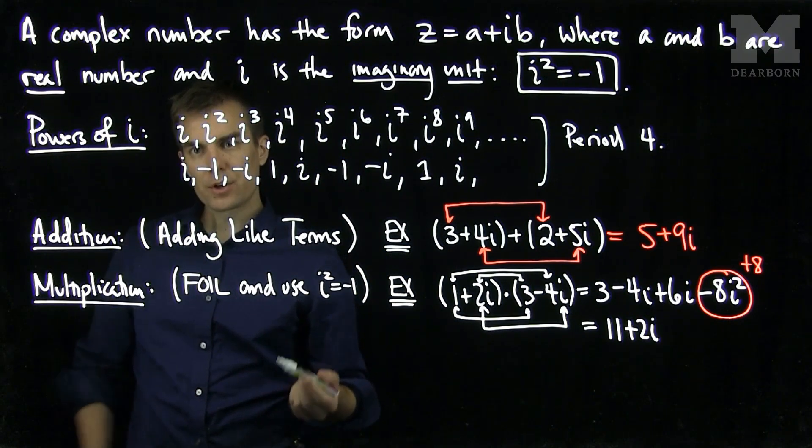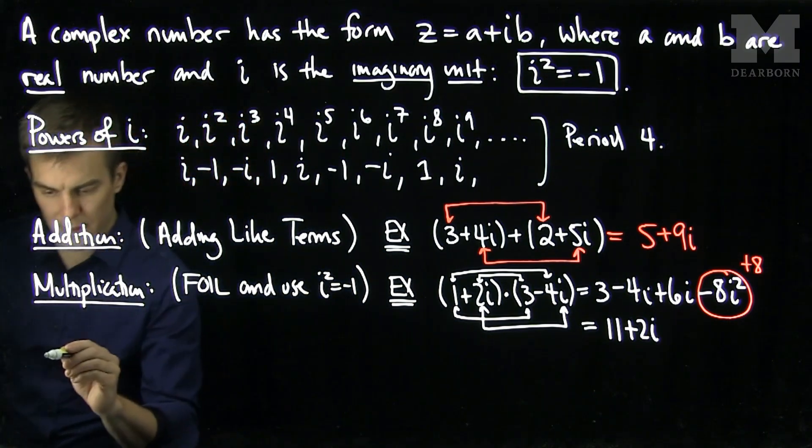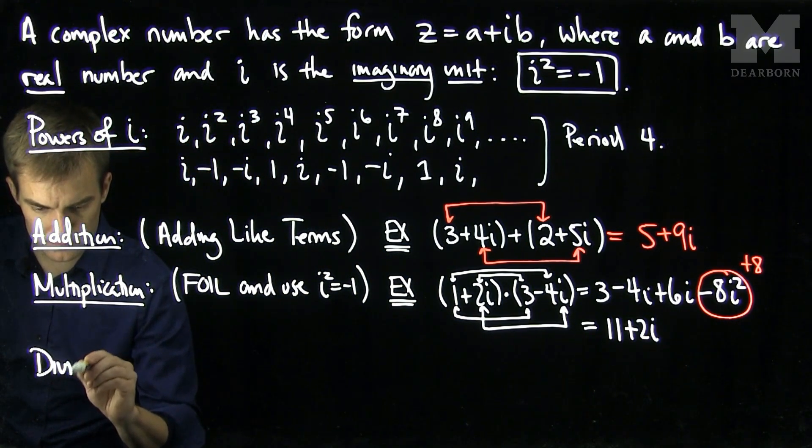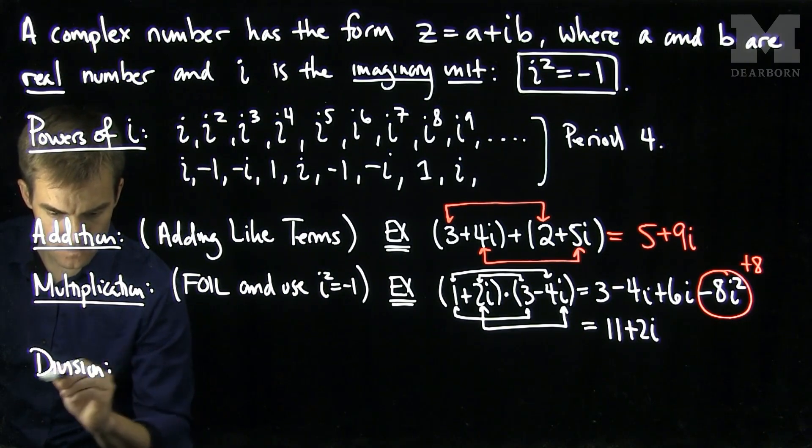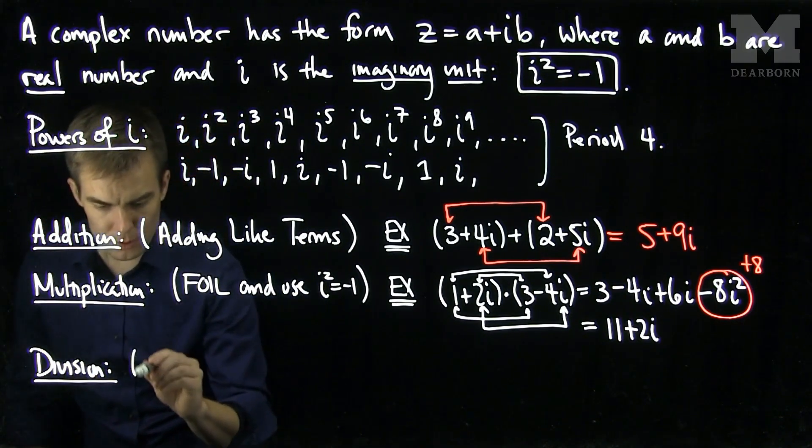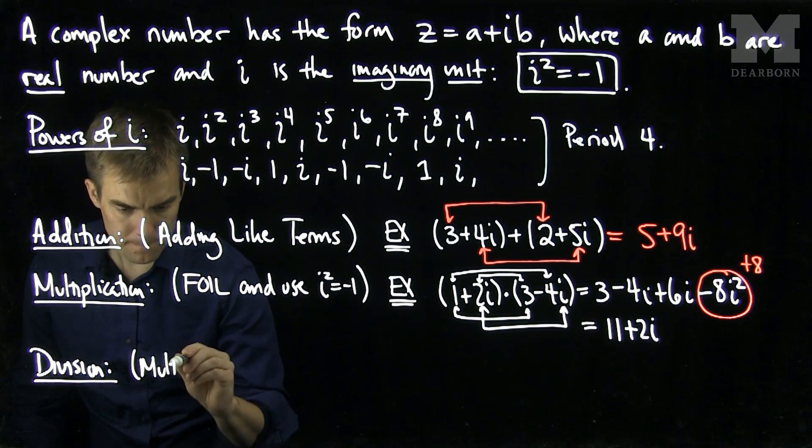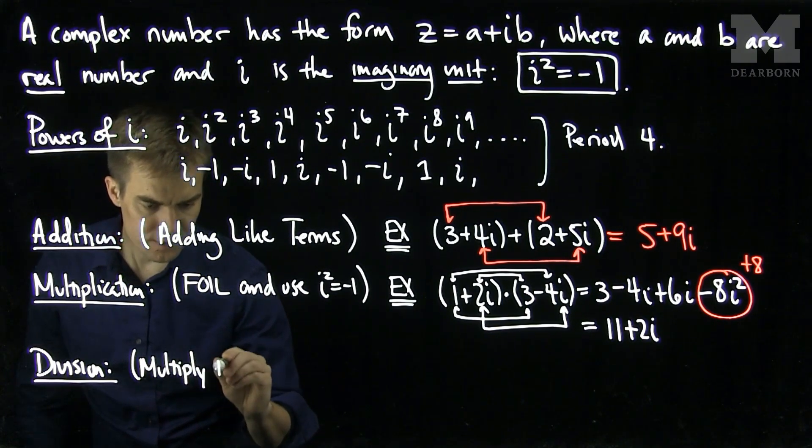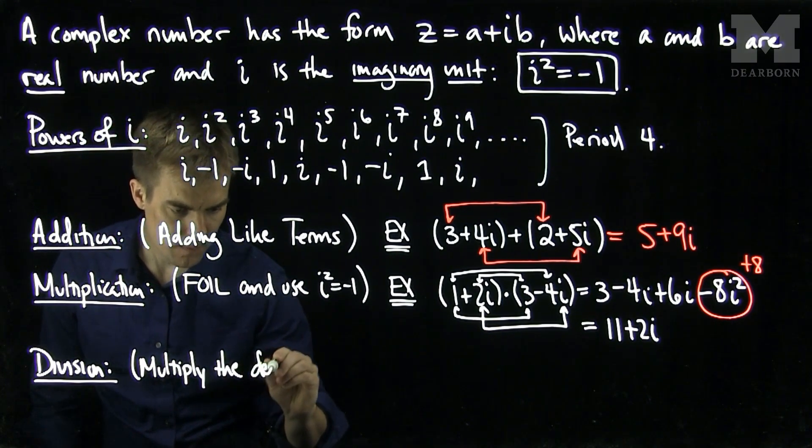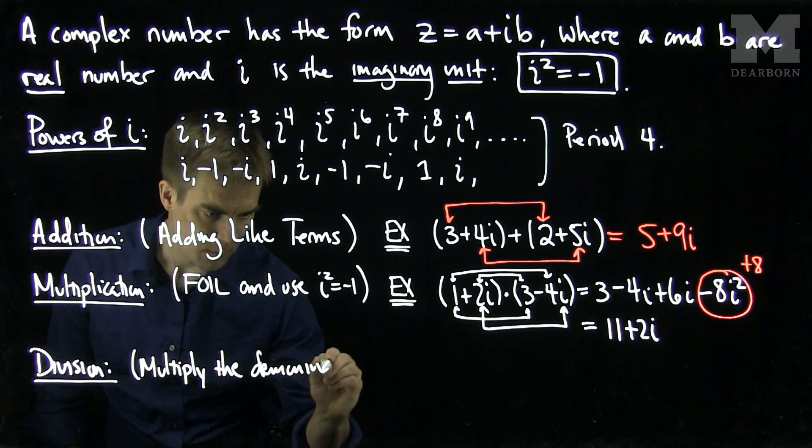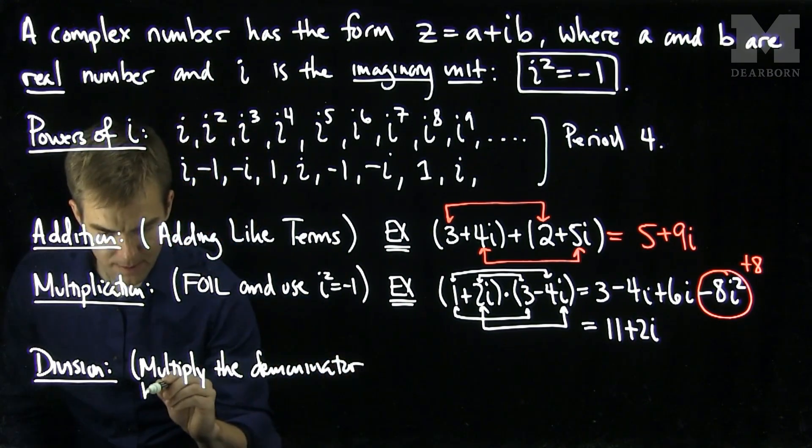The last operation is slightly different, and that's the operation of division. And to divide complex numbers, we multiply the denominator by the complex conjugate.